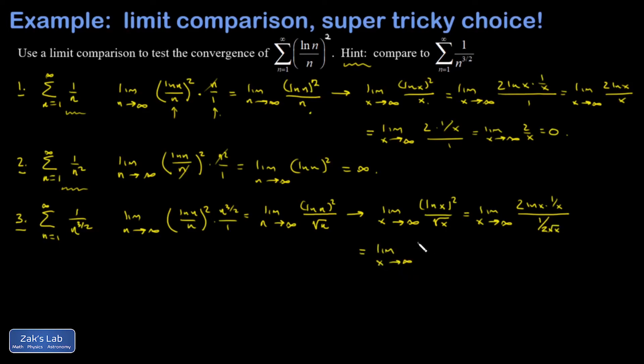All right, I'm going to multiply by the reciprocal there. And I get the limit as x goes to infinity of four natural log of x. And then when I multiply root x times one over x, that gives me one over square root of x. So I'm just going to throw that in the denominator in the same step.